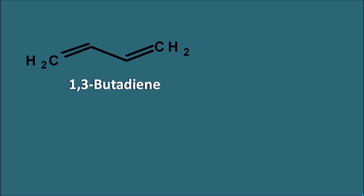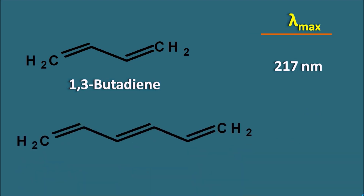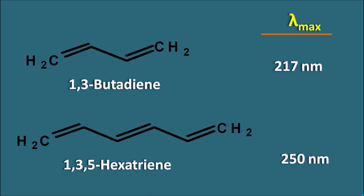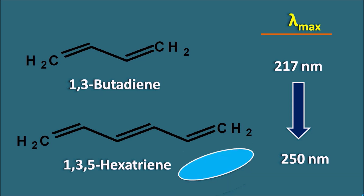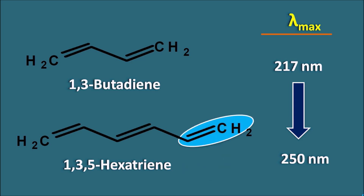Again, let us take 1,3-butadiene. It has a lambda max of approximately 217 nanometers. If we take another compound, 1,3,5-hexatriene, this triene has a lambda max of approximately 250 nanometers. The lambda max of butadiene is 217 nm but 1,3,5-hexatriene is 250 nm — the lambda max value has increased by around 33 nanometers.